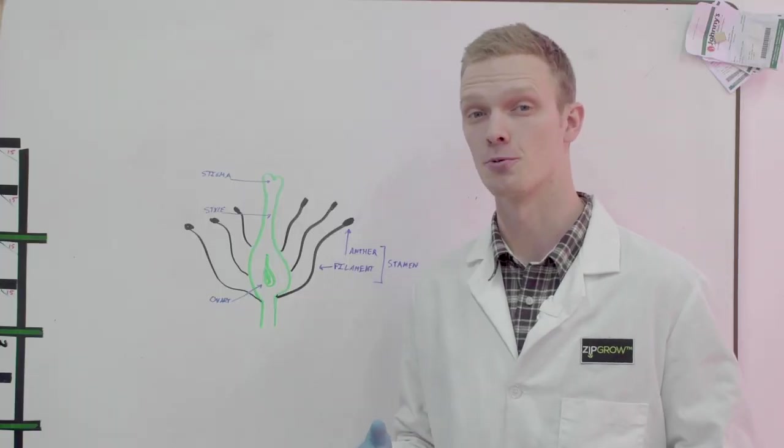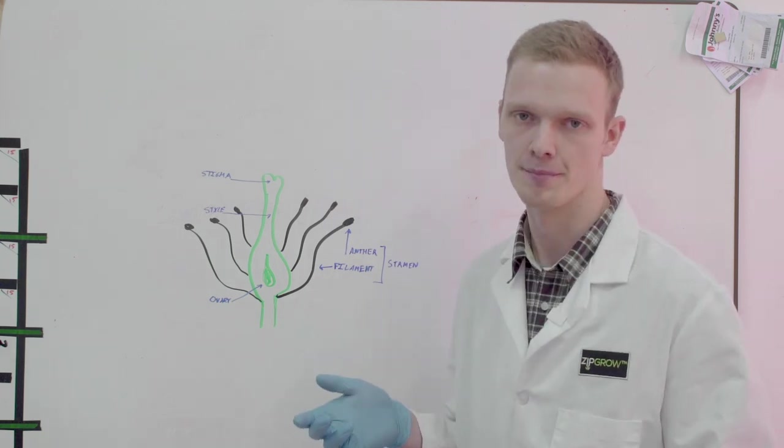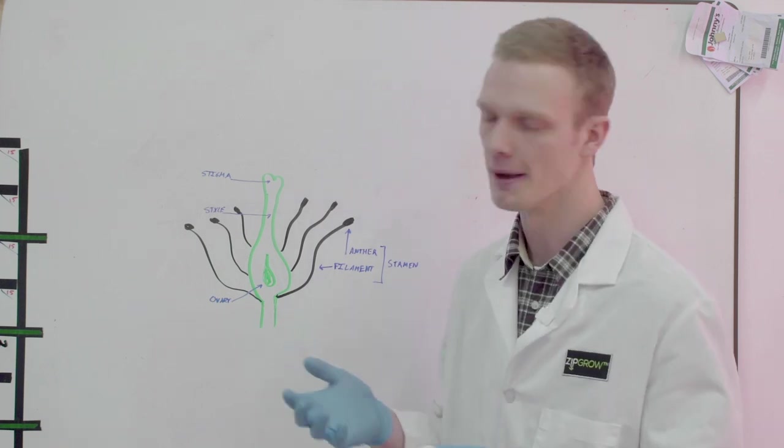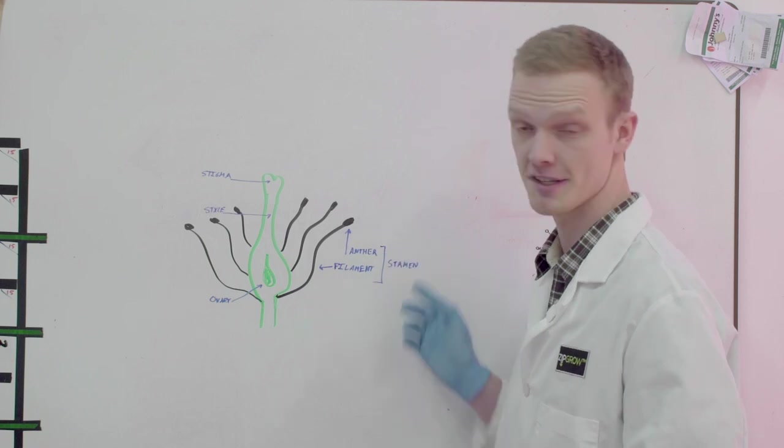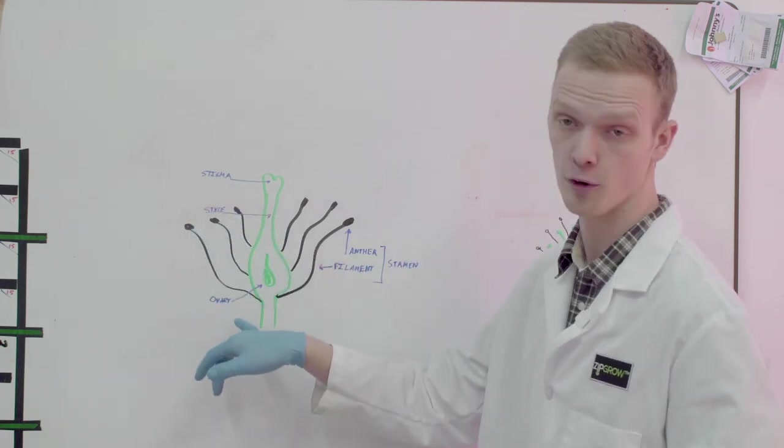To further understand how pollination works I'm going to explain it through the diagram of reproductive biology in a flower. So in a flower there's basically male parts and female parts. The male parts are composed of an anther and a filament that's called the stamen overall and then the female parts involve a stigma, a style and an ovary.